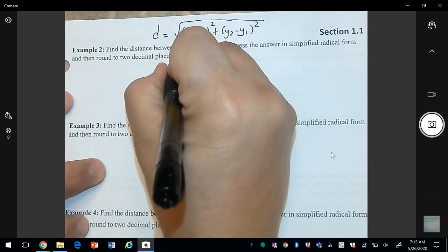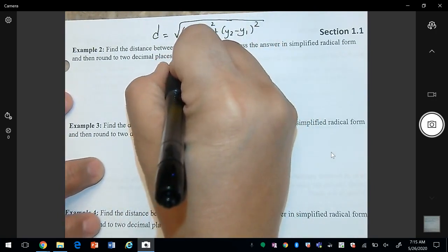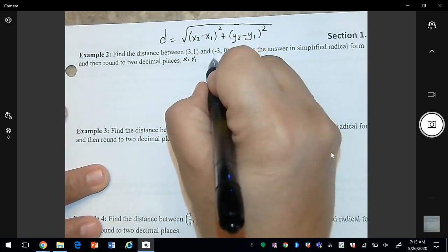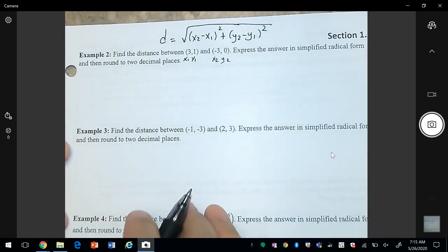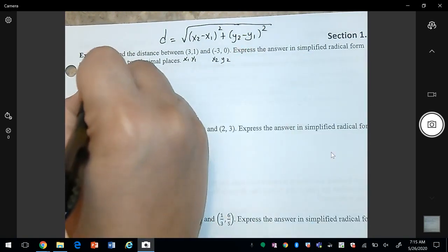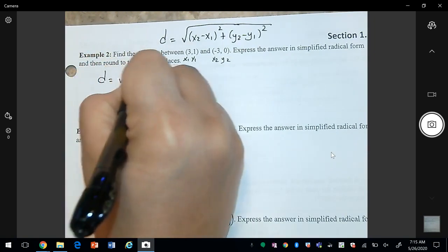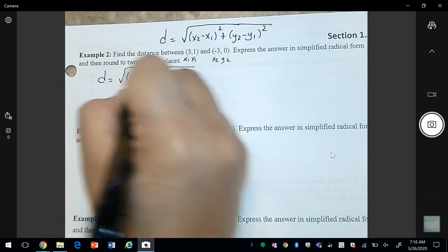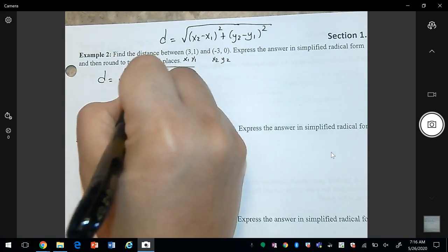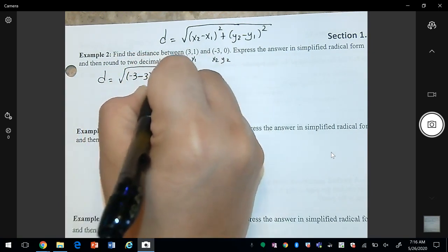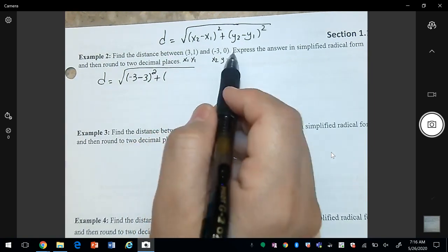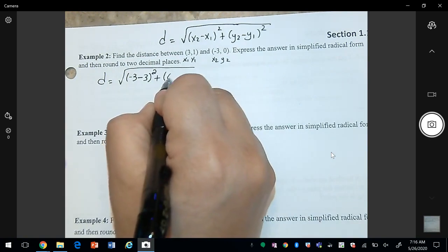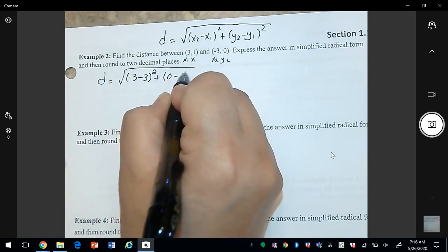We can label our ordered pair as x₁, y₁, and x₂, y₂. And so I can plug in these numbers. x₂ is negative 3, x₁ is 3 squared plus y₂, y₂ which is 0, minus y₁, which is 1.